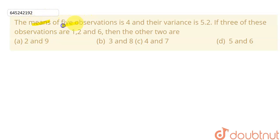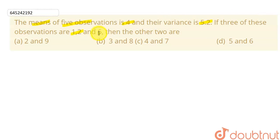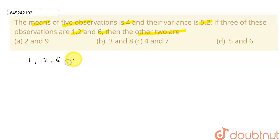In this question, we are given that the mean of five observations is four and their variance is 5.2. Out of these five observations, three are given to us: one, two, and six. We need to find the other two observations.